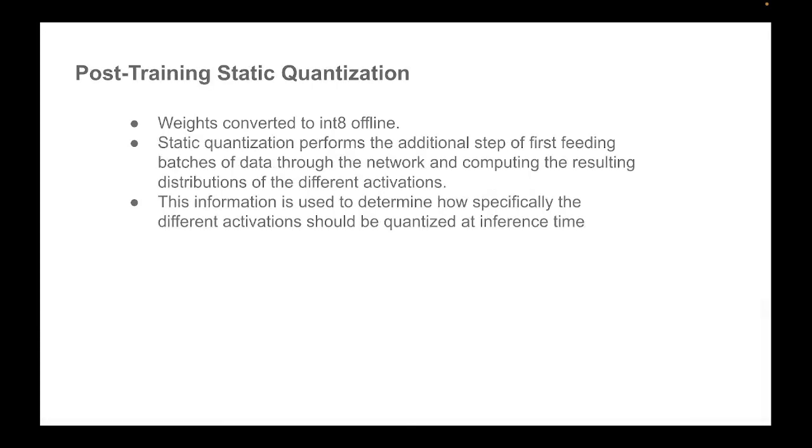So now let's see how post-training static quantization differs from dynamic quantization. Here, the weights are converted to int8 offline. So static quantization performs this additional step of first feeding a batch of data into the network as a preparation. So we have these observer modules inserted into the neural network model which captures the statistics of the data distribution happening at each layer. So it calculates the min value, max value of different activations coming at each layer and then uses this to calculate the scale and the zero point. So this information is used to determine how specifically different activations should be quantized at inference time.